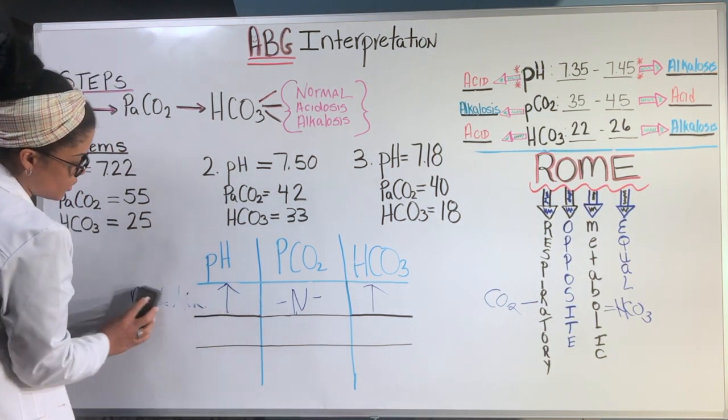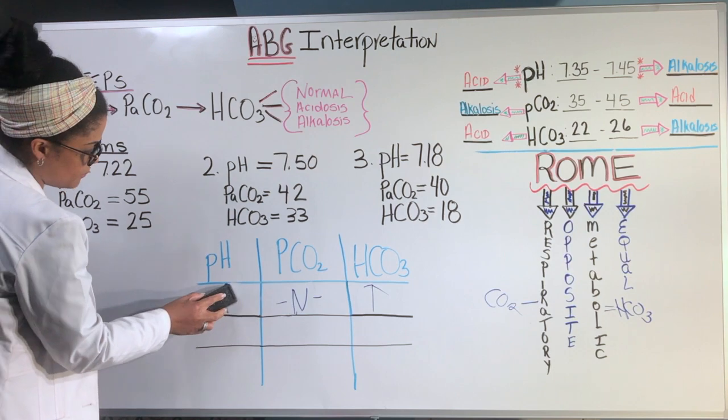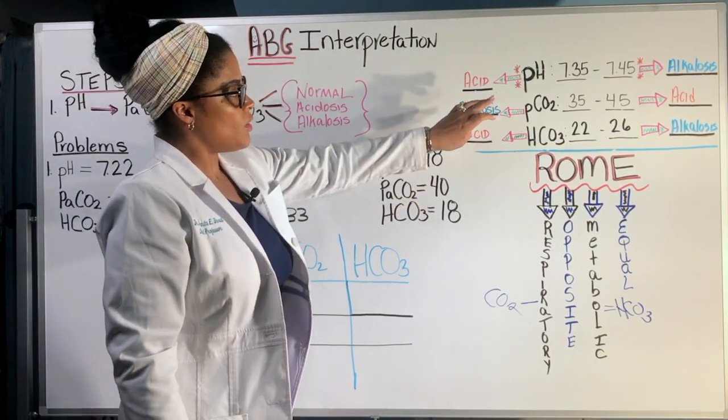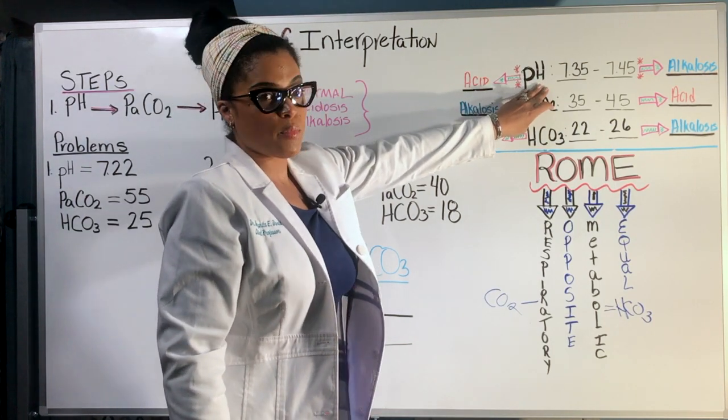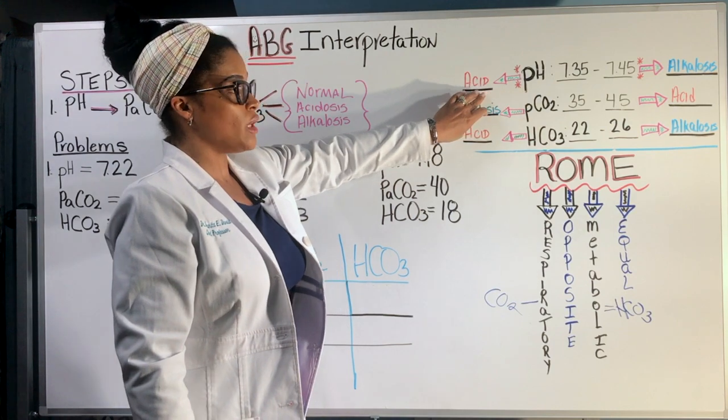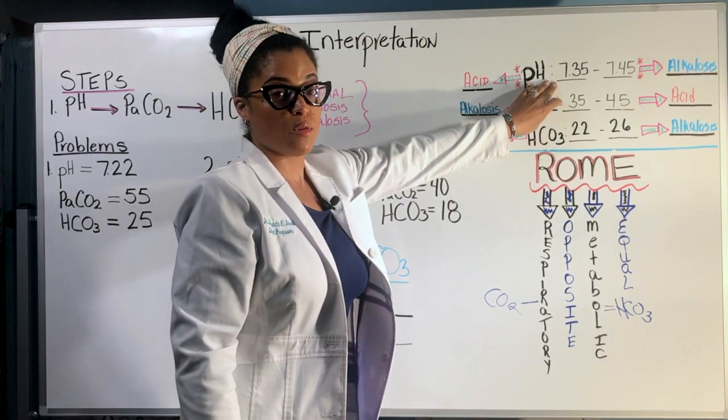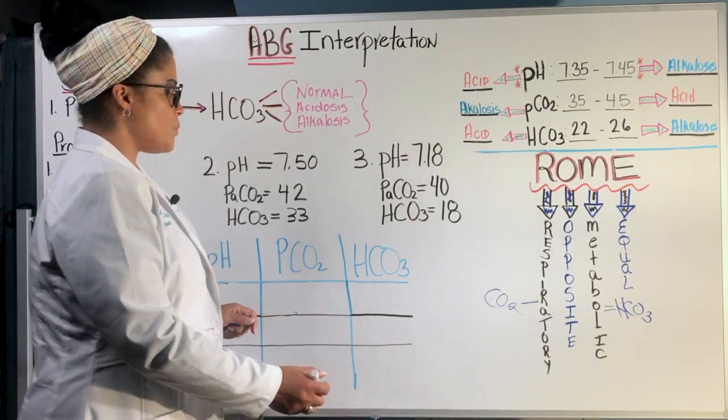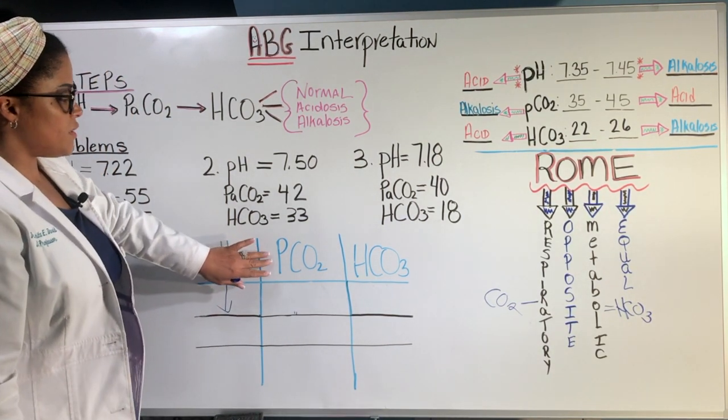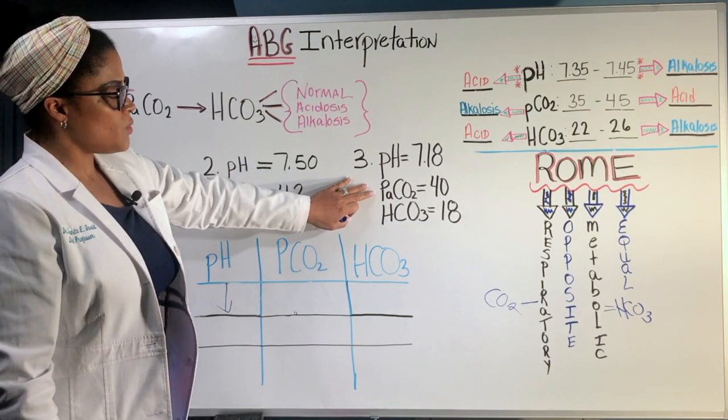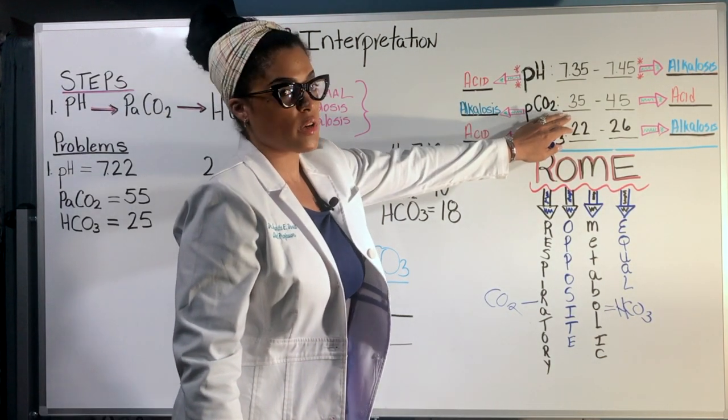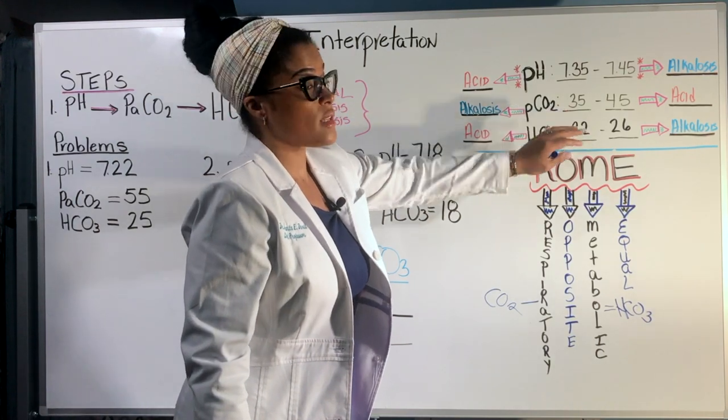Now we're going to do the third example. In this third example, the pH is 7.18. And the normal pH goes from 7.35 to 7.45. So we know that it is below the minimum level it should be. So we are going to put the arrow facing down. Then we're going to look at the CO2 level. The CO2 level for this example is 40. The normal range is 35 to 45. So that tells us it's normal.